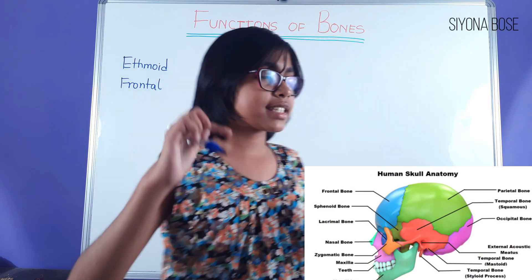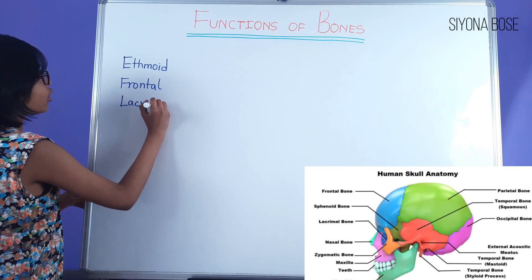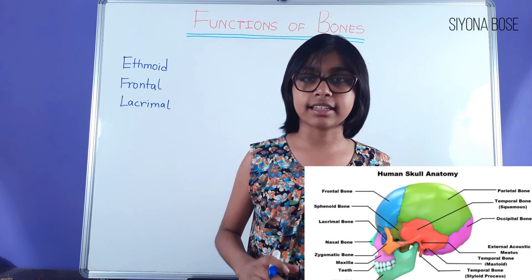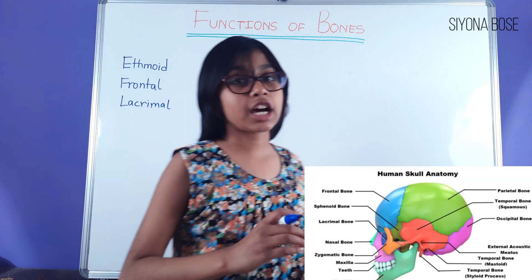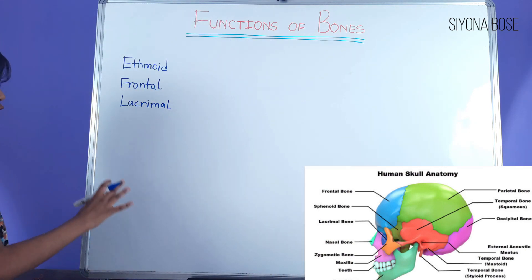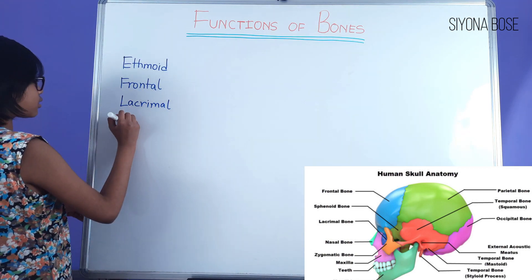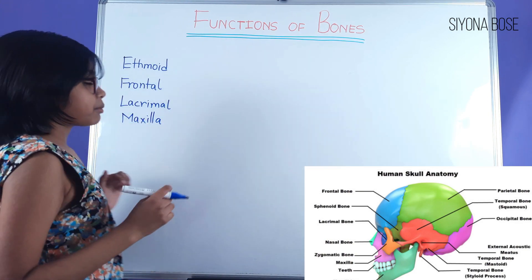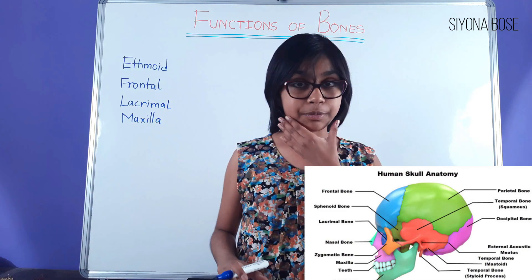Then we have lacrimal, present near the eyes, as the name suggests. There are also glands called lacrimal glands which produce tears — tears are produced all the time for cleaning the eyes. But this is the bone. Then we have maxilla, which makes up a huge part of the face — the nasal area is the maxilla.